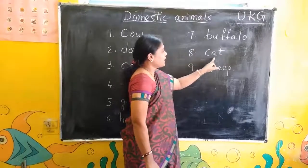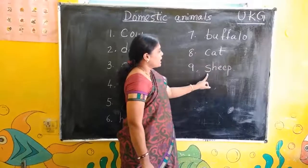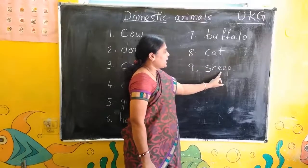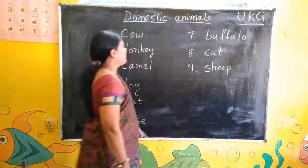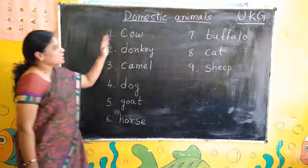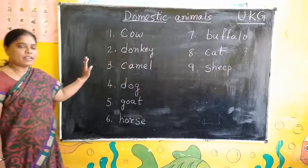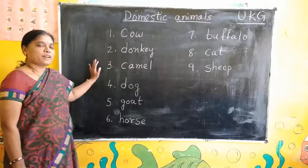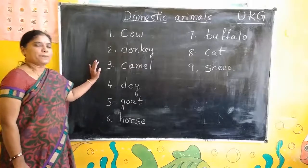Cat — C-A-T. Sheep — S-H-E-E-P. First, learn this orally and then write your homework, children. First, try to learn it orally.